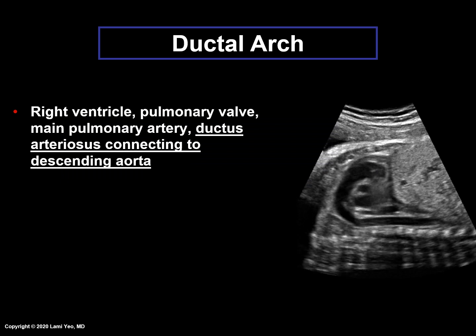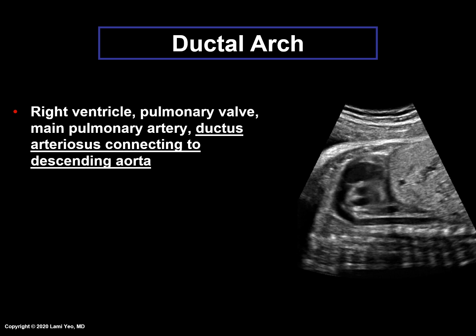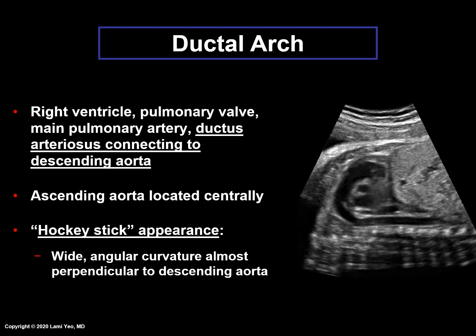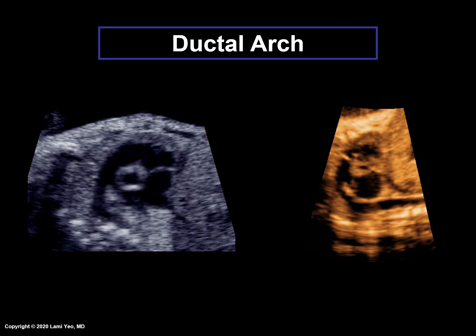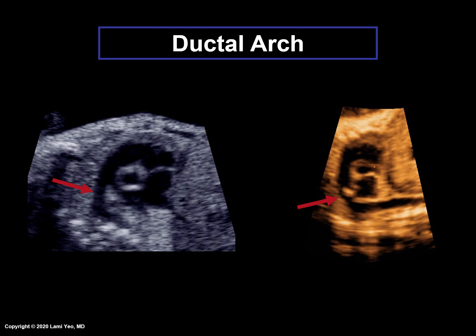Ductal arch. The ductal arch consists of the right ventricle, pulmonary valve, main pulmonary artery, and the ductus arteriosus connecting to the descending aorta. The ascending aorta is located centrally. One of the characteristics of the ductal arch is that it has a hockey stick appearance because it is derived from the pulmonary artery. Therefore, the ductal arch has a wide curvature that is almost perpendicular to the descending aorta. It is noteworthy that the normal ductal arch can look different depending on the fetus. The ductus arteriosus may appear wide in some fetuses but more narrow in others, yet still be normal.